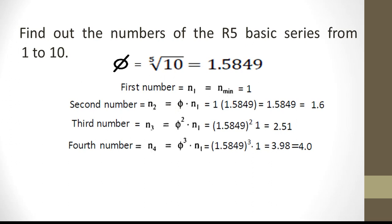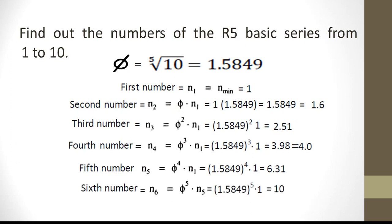We will round it off and make it 4. The fifth number is step ratio raised to 4 times n₁, which turns out to be 6.31. The last sixth number, by the same calculation, turns out to be 10.